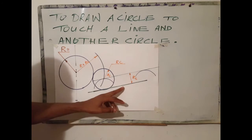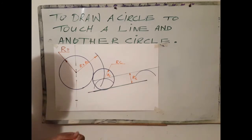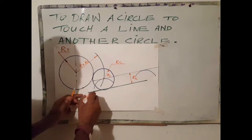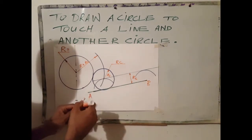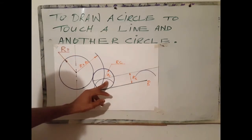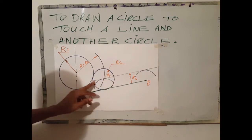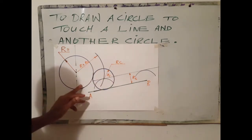The first step is to draw a line parallel to the existing line which I will label AB. Draw a line parallel to line AB at a distance equivalent to the radius of the circle that you wish to blend both circle and arc.